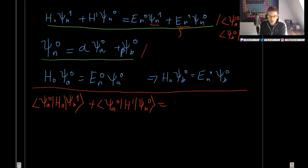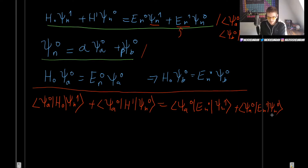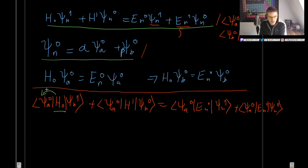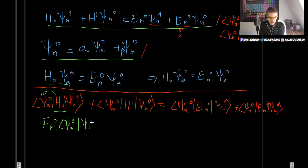Since the Hamiltonian is Hermitian, we can let it act on Psi_A0, which gives simply E_N0. So the first term becomes E_N0 Bra-Psi_A0 Ket-Psi_N1, which is precisely what we have on the right-hand side, and those two terms cancel out. This is exactly the same trick we used in the non-degenerate case.